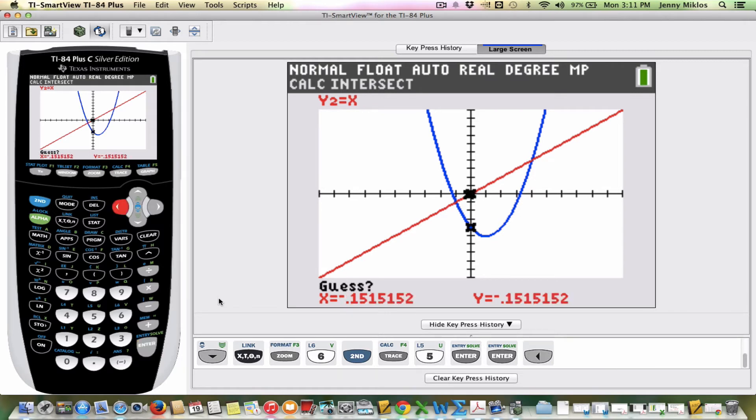Now it's asking me to guess. So I'm going to move my cursor over near where I think the point of intersection is. And I'm going to press enter a third time. And it tells me that that point of intersection is negative 1, negative 1. So that is my first answer.